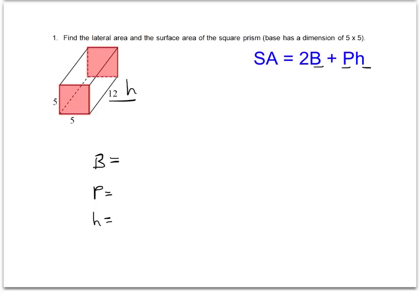just to remind yourself what each of these values represents. The B represents the area of the base, P represents the perimeter of the base, and the H, of course, is the height of the entire prism.